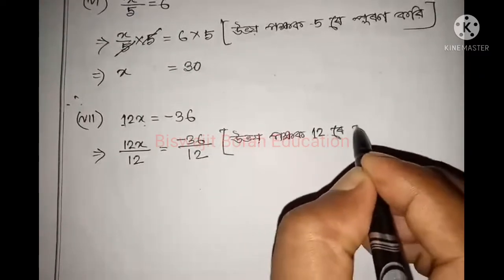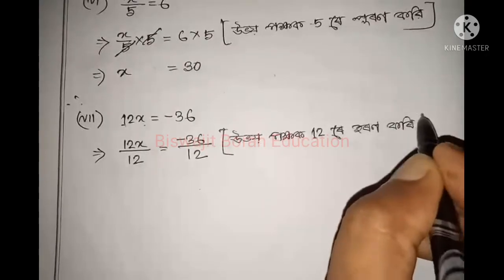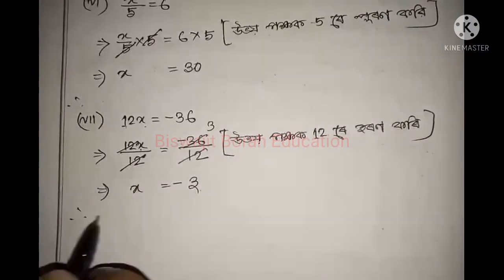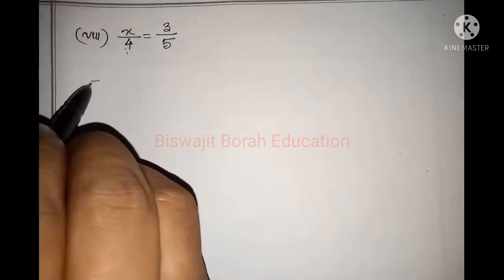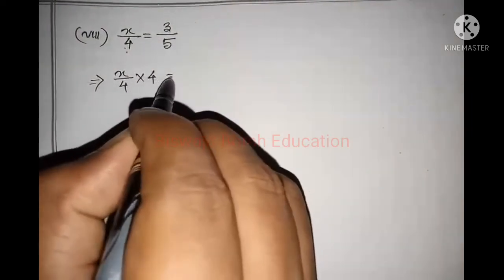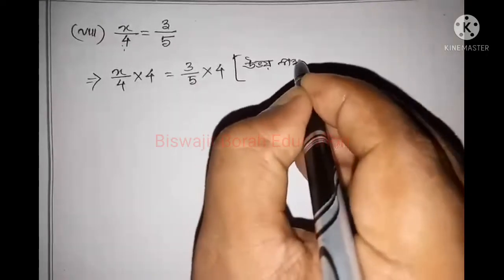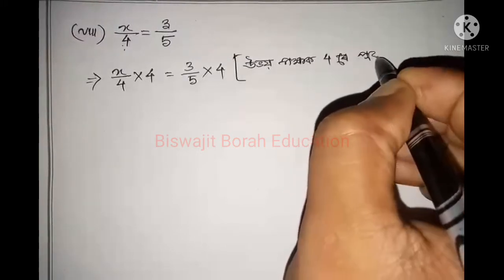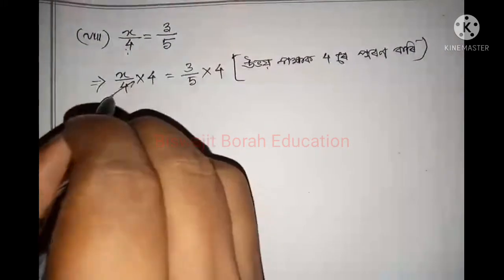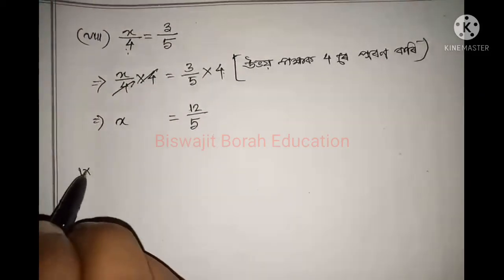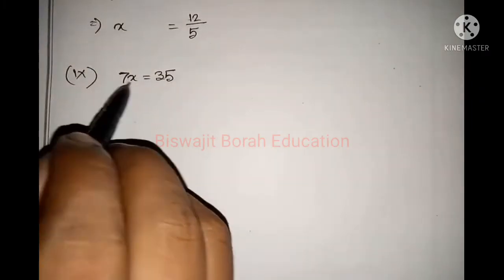Here we show the value for 12 with 14. The value of 3 is equal to 12. So we have the values: x equals 3 by 5. So 7x equals 35. Its total value is equal to 5. So 7x equals 35.